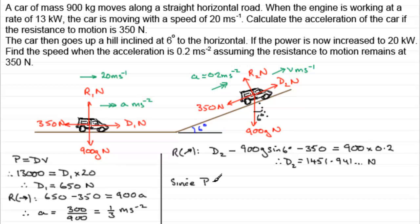In other words, since power is equal to that driving force, D2, times the speed that it's going at that moment in time, it follows that the power, remember, has to be converted to watts. That's going to be 20,000 watts is equal to D2, so we've got 1451.941 and so on. That's got to be multiplied by the velocity V. Okay, so to get V, all we need to do is divide by the 1451.